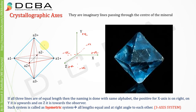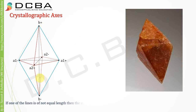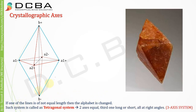In the second system, one of the axes is not going to be of the same length. The naming would be: a1 minus, a1 plus, a2 plus, a2 minus in the x and z axes, and in the y axis it will be b plus and b minus. If one of the lines is of unequal length, the alphabet is changed. Such a system in which two axes are of equal length and one axis is unequal is called the tetragonal system, and all axes are at right angles to each other.